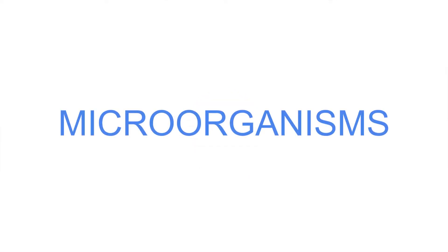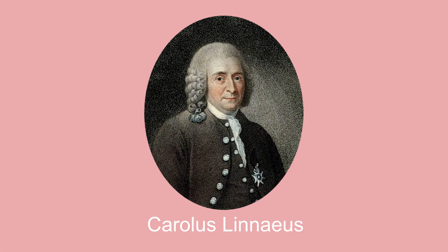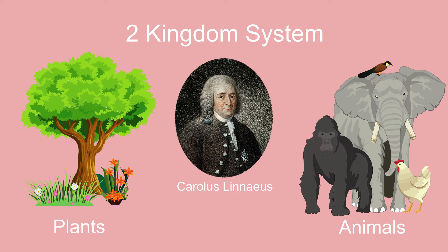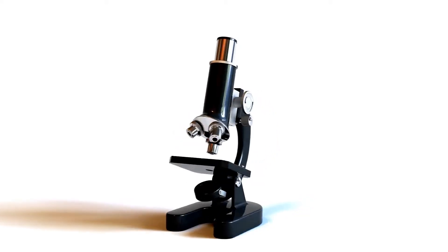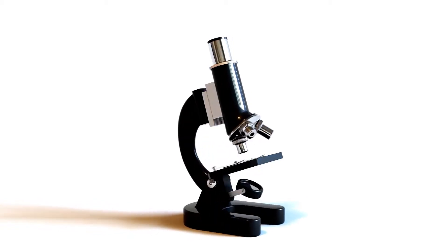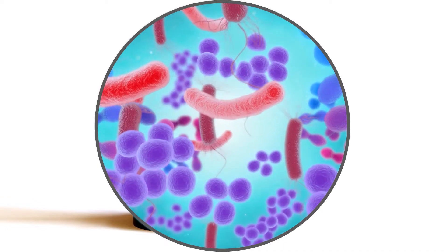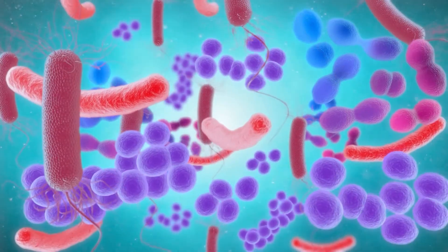For today's lesson, we will talk about microorganisms. When Carolus Linnaeus developed his classification system in 1735, there were only two kingdoms: plants and animals. Through the use of the microscope, it led to the discovery of microorganisms, which then led to further identification of differences in cells.